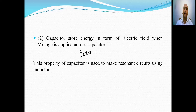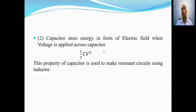A capacitor, like an inductor, stores energy in the form of an electrical field when voltage is applied across it. The energy stored in a capacitor is given by the expression ½CV², where V is the applied voltage and C is the capacitance. It also opposes sudden changes in the voltage across it, and this property is used to make resonant circuits using inductors.